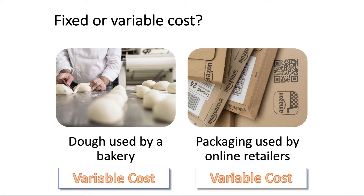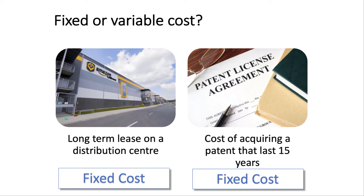It's important to think about the costs of a business and we normally make a distinction between fixed and variable costs. Raw materials and ingredients used by bakeries will be variable costs. For a business like Amazon, the packaging used by online retailers is a variable cost — costs that depend directly on output. Whereas the long-term lease on a fulfillment center or distribution center, and the cost of acquiring patents, would be treated as a fixed cost of production.